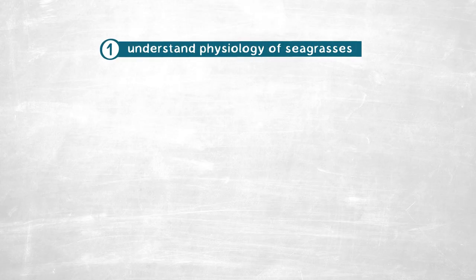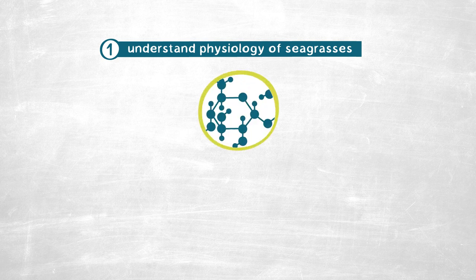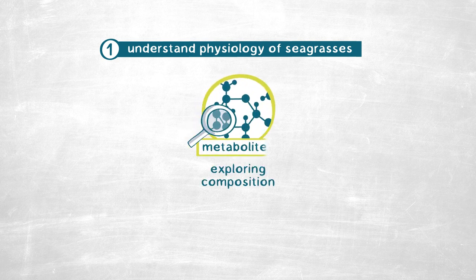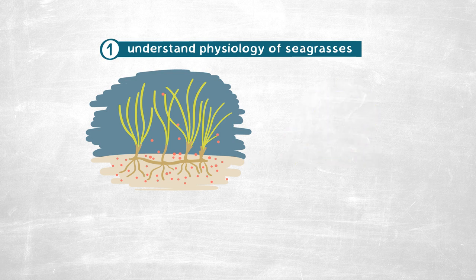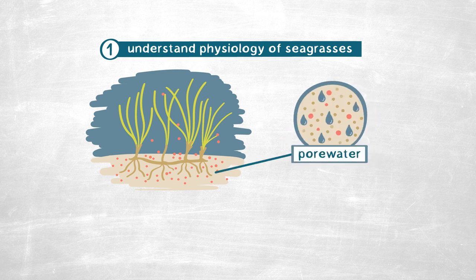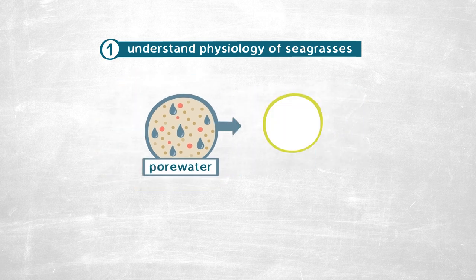I first started tackling this project by going out into the field and exploring the composition of metabolites occurring underneath seagrass meadows. To do this, I collected pore water — basically seawater occurring in between the sand grains of the sediments — and saved it for metabolomic analysis. When I started this project, there wasn't a good method available to measure these metabolites in such low sample volumes, so I had to develop a new method to detect them.